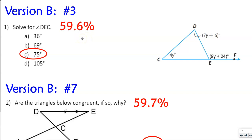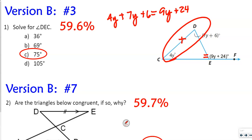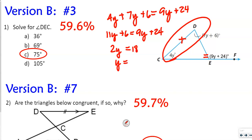What we need to do to solve this problem is add these two angles together, and they equal the exterior angle. So we're going to say 4y plus 7y plus 6 equals 9y plus 24. So 4y and 7y are like terms — that's 11y plus 6 equals 9y plus 24. Subtract 9y from both sides to get 2y, then subtract 6 from both sides, giving us 18. So y equals 9.